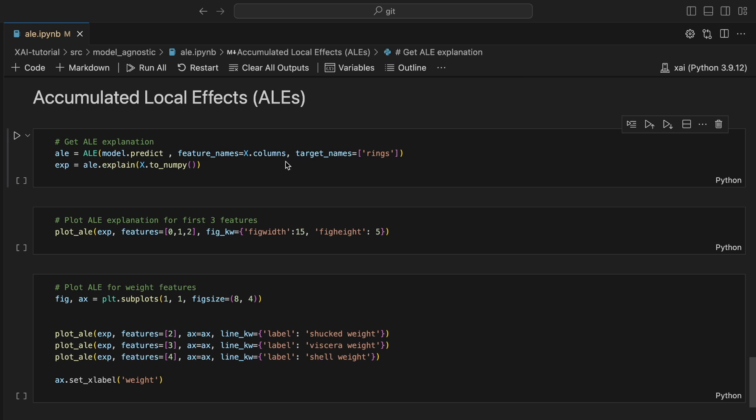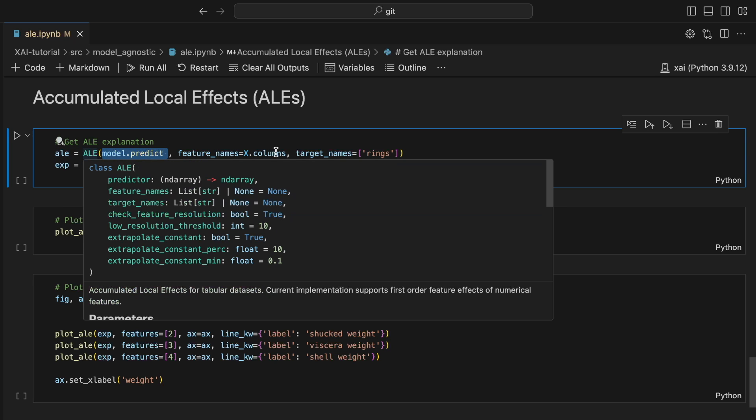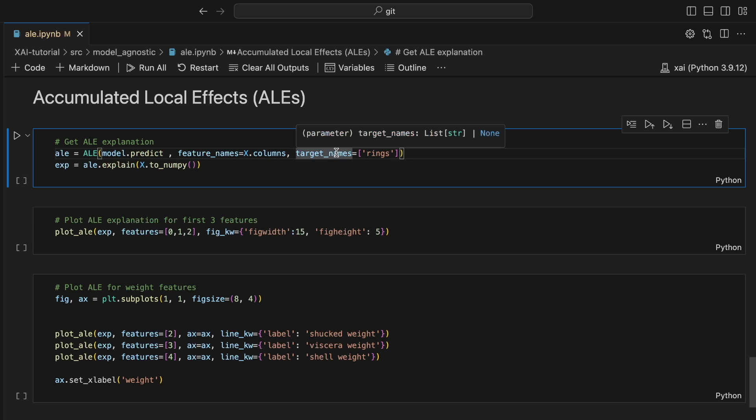To create ALE plots, we start by creating an ALE object. To do this, we pass in our model's prediction function, our feature names, and target variable. We use this object to create explanations for our X feature matrix. The explain function requires that the matrix is a NumPy array.